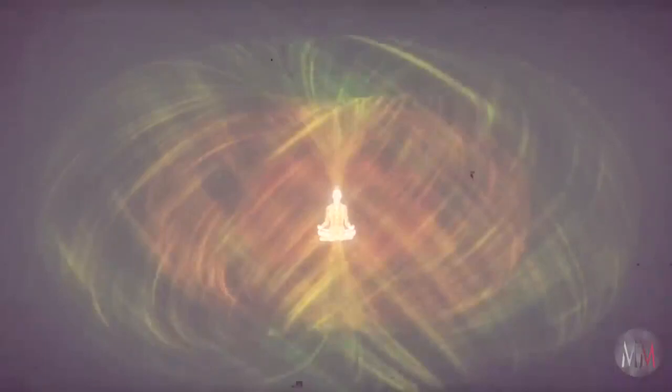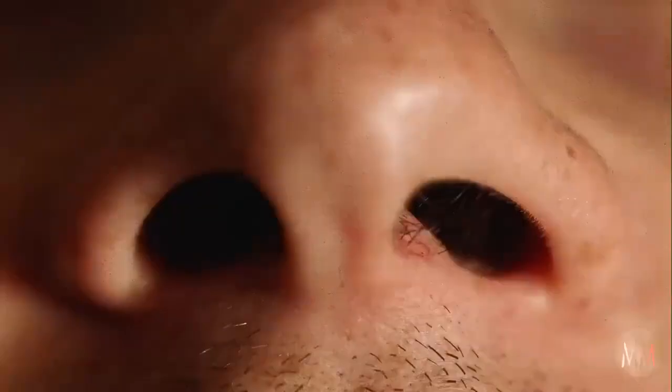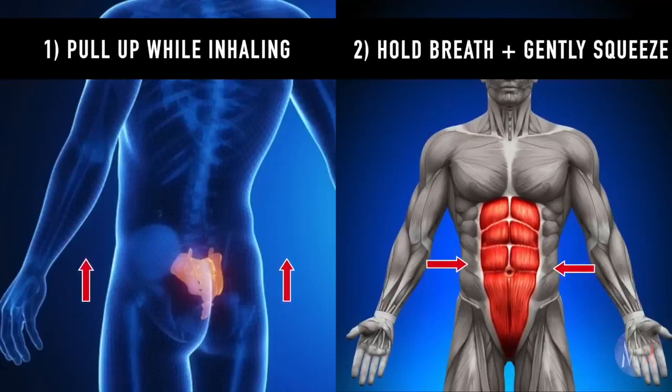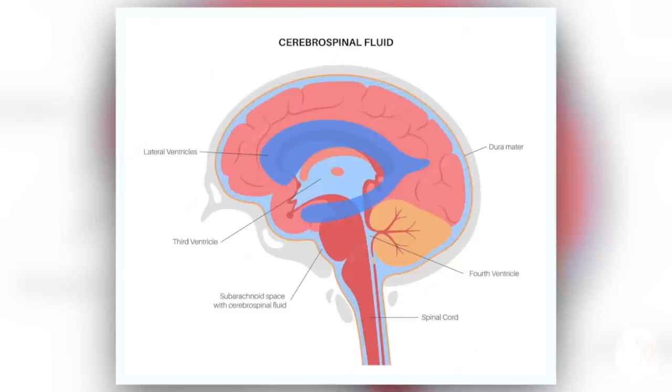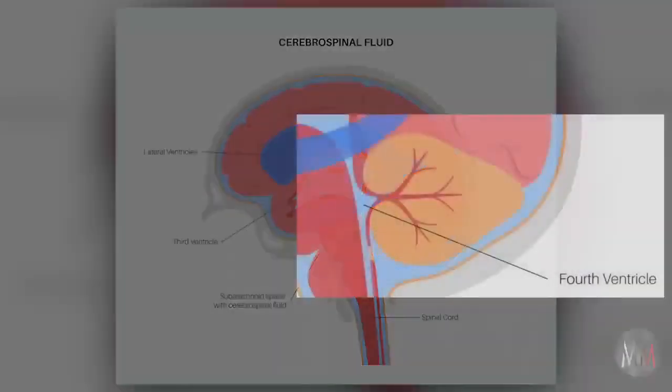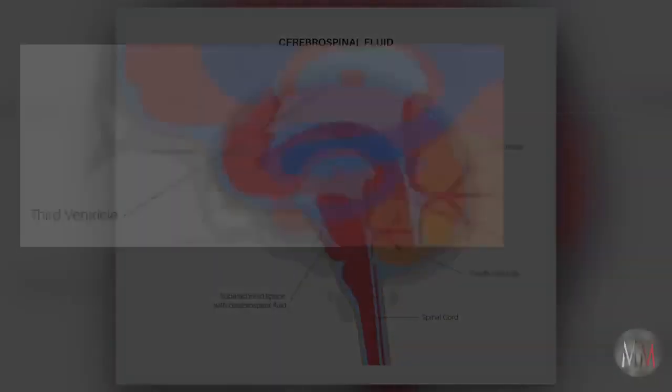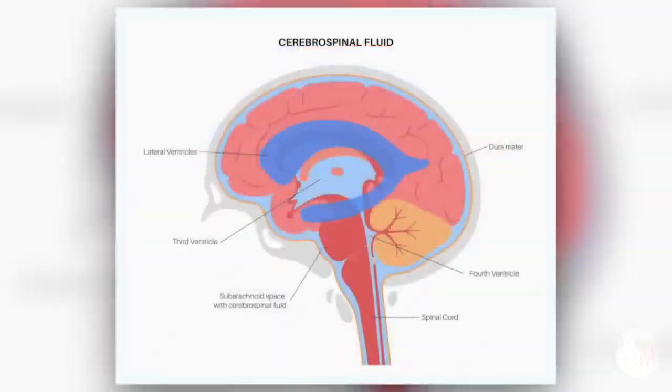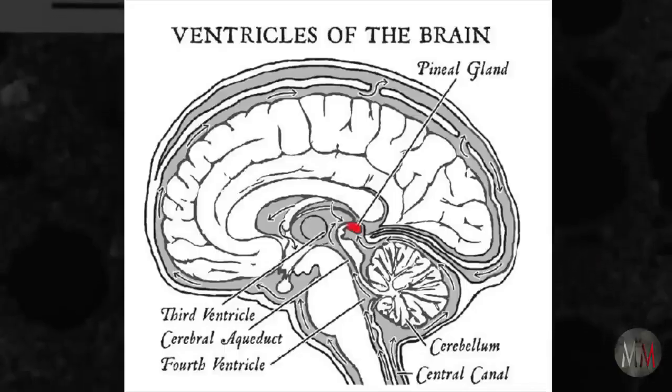When we inhale through our nose and at the same time squeeze our intrinsic muscles, we accelerate the cerebrospinal fluid into the brain. As we follow the movement of energy to the top of our head, then hold our breath and squeeze, we are increasing intrathecal pressure. The increased pressure moves the cerebrospinal fluid from the fourth ventricle through a small canal into the third ventricle. At the same time, fluid traveling around the cerebellum compresses the crystals of the pineal gland.